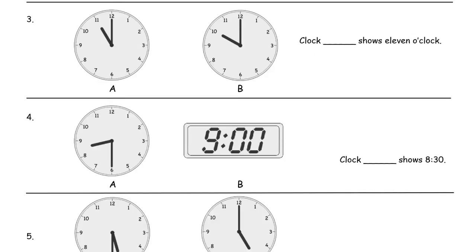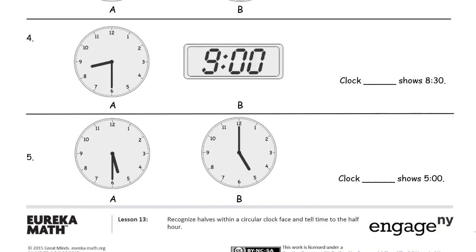Next, we're looking for 11 o'clock, so the minute hand goes straight up to the 12 — both clocks have that. So we look at the one where the hour hand points to the 11. That's clock A. Then we're looking at a clock that shows 8:30. It's not the one that says 9 o'clock, so it's the one with the minute hand down at the 6, and the hour hand in between the 8 and the 9 — halfway past 8 on its way to 9. That's clock A.